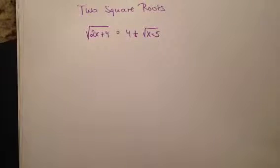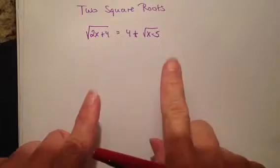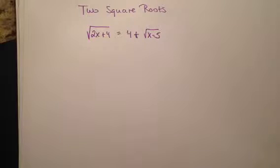Third example from our test review today. Notice I have two square roots in this equation. Hopefully you're thinking the way to undo a square root is to square it. But because I have two of them, I am eventually going to have to square root this problem twice.